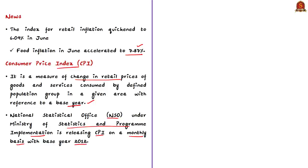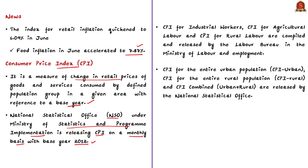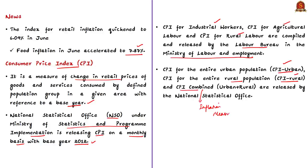There are a few important CPIs for different sections of population: CPI for industrial workers, CPI for agricultural labour, and CPI for rural labour. These indices are compiled and released by the Labour Bureau in the Ministry of Labour and Employment. Apart from these, NSO also releases CPI Urban for the entire urban population, CPI Rural for the entire rural population, and CPI Combined. The Reserve Bank of India uses CPI Combined as the inflation measure for setting inflation targets and ensuring price stability.